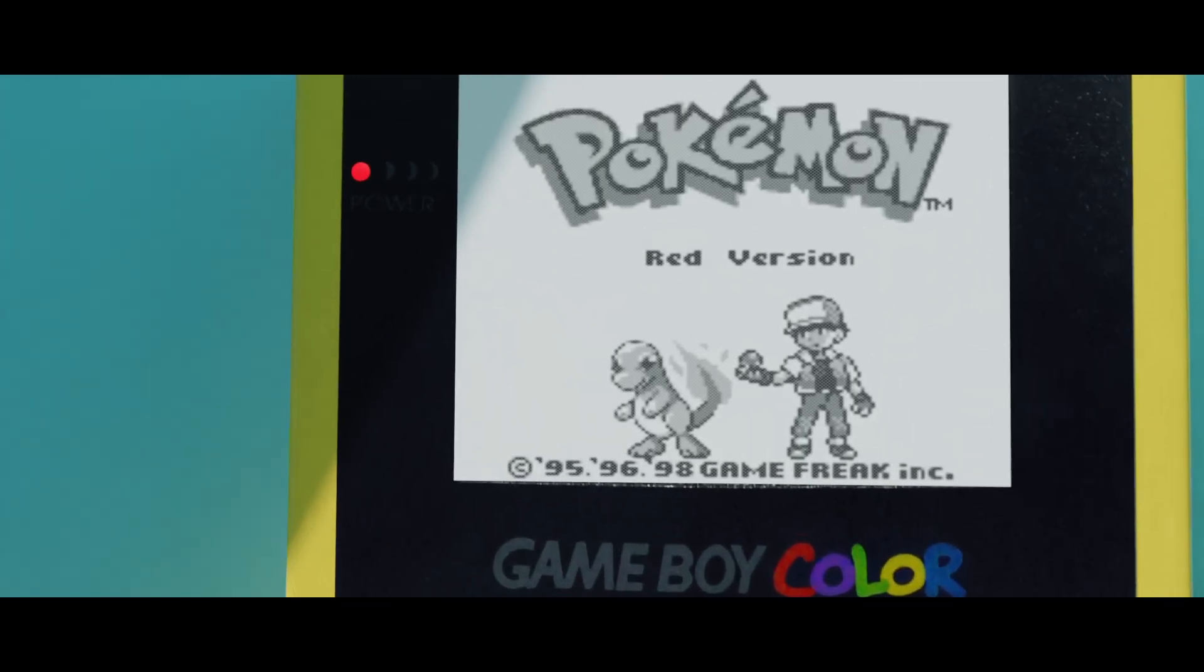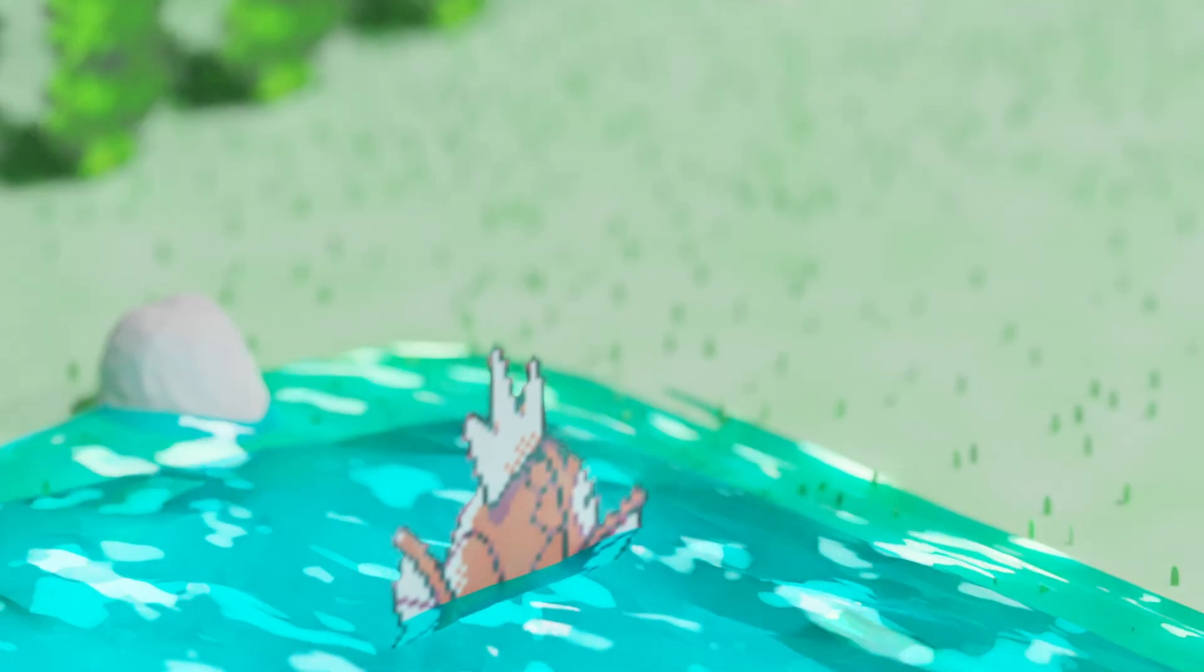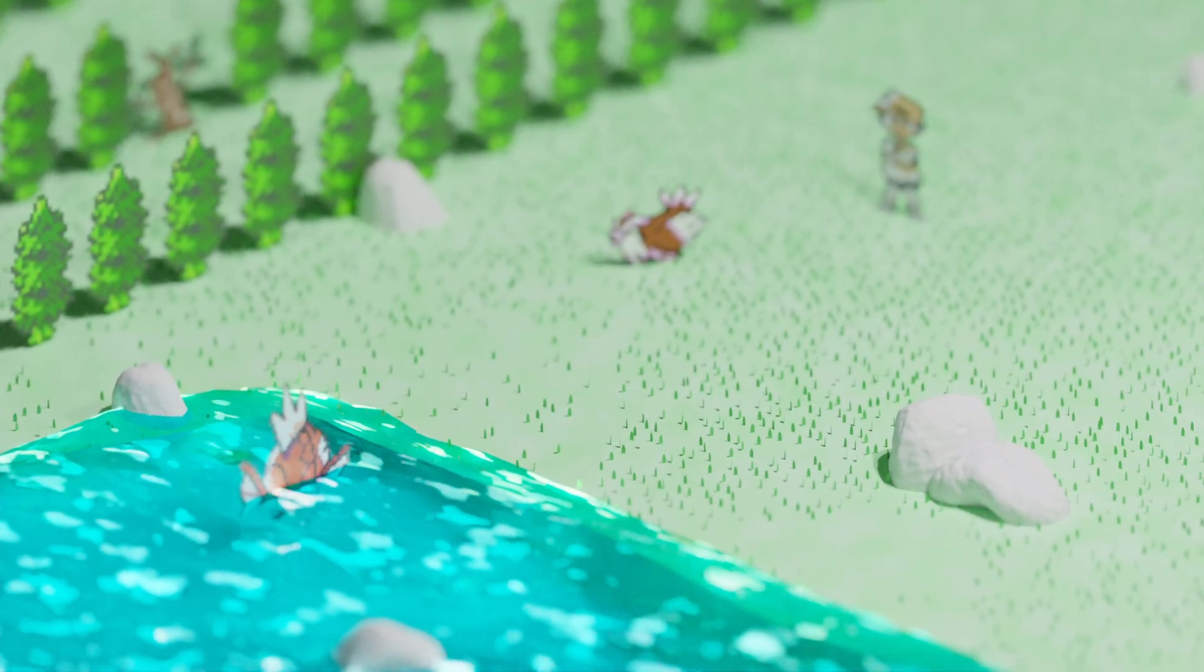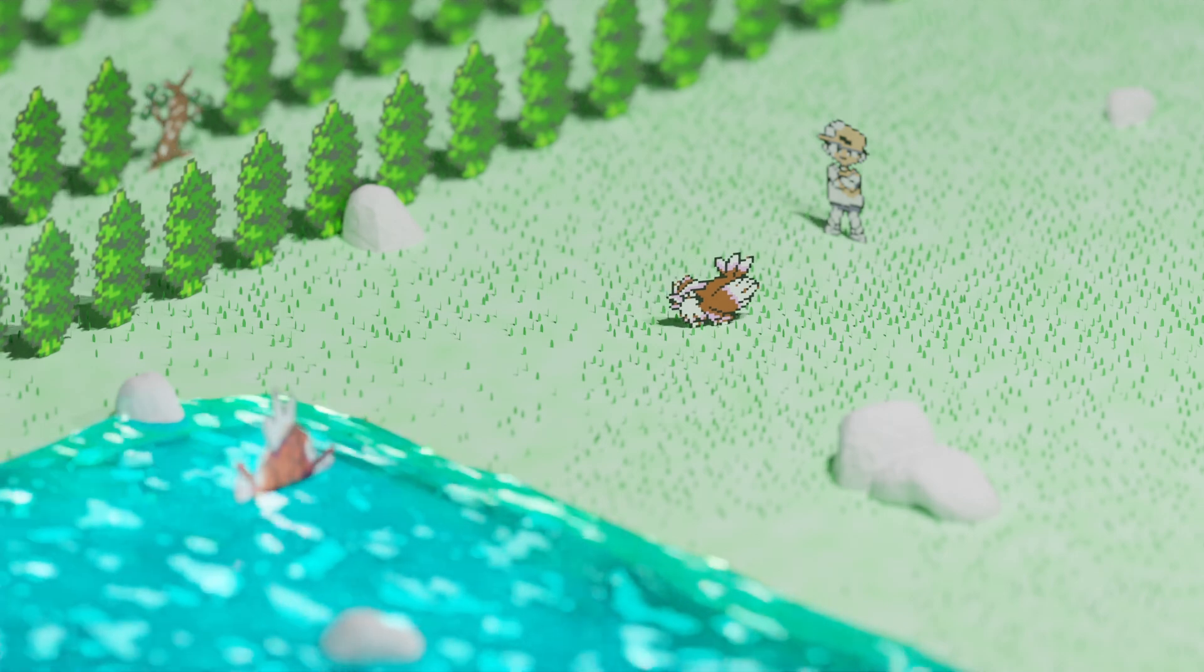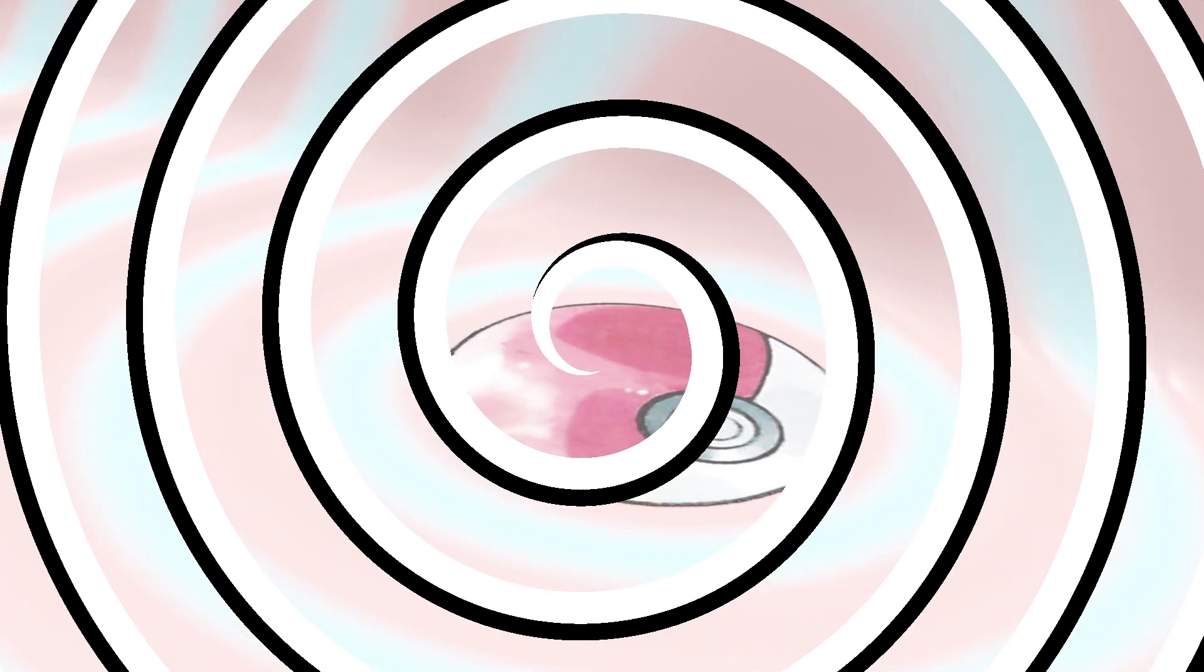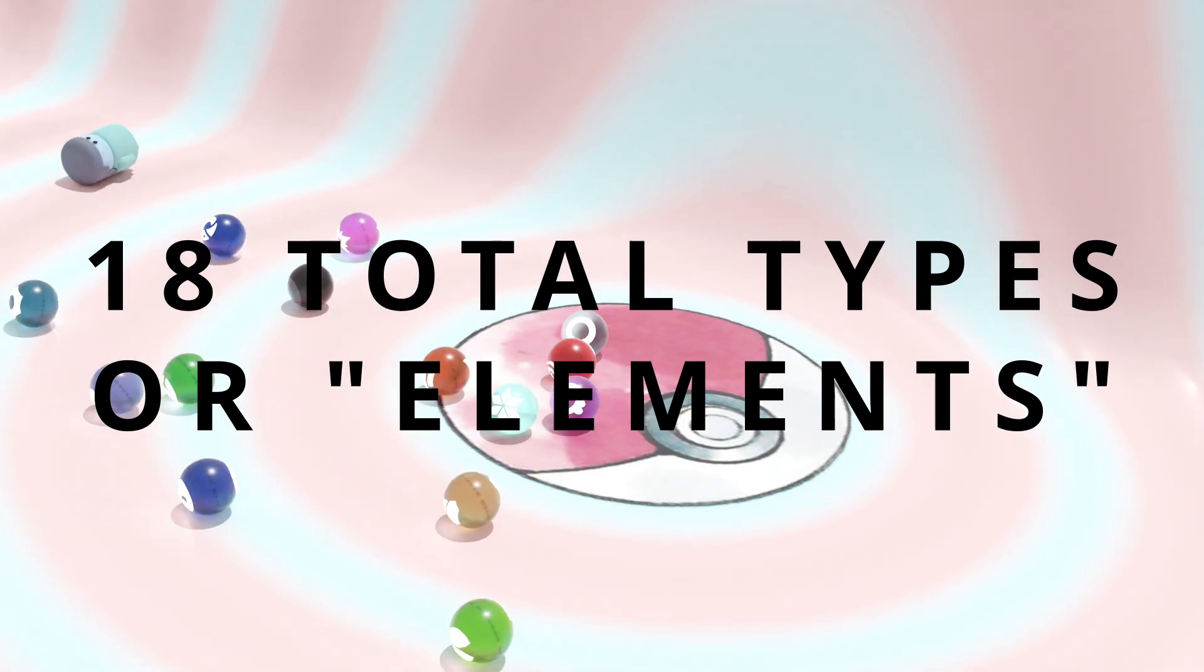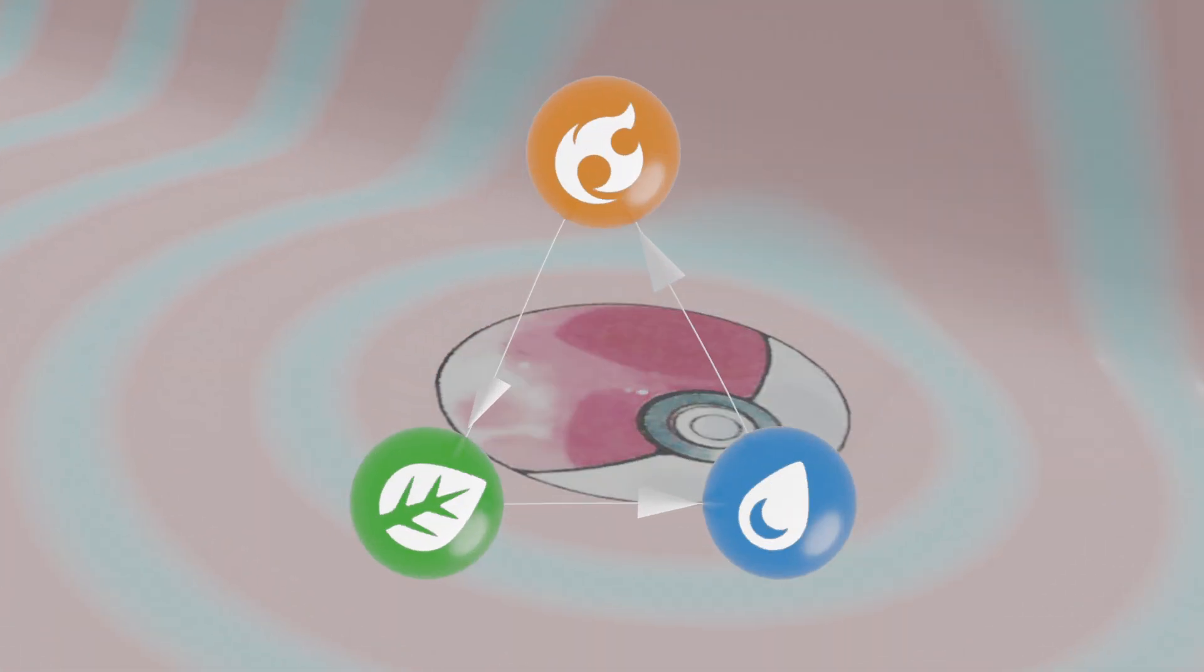Pokemon themselves are a set of, at the time of writing, approximately 900 creatures. Within the series of TV shows and video games, small children will perform the morally questionable act of catching these creatures and making them fight against one another. But apparently they like it, so I don't know. These creatures have associated elements, or types—water, fire, electric, and so on—of which there are 18 in total. Some of these types are strong against others, so we can think of Pokemon as a complex game of rock, paper, scissors.